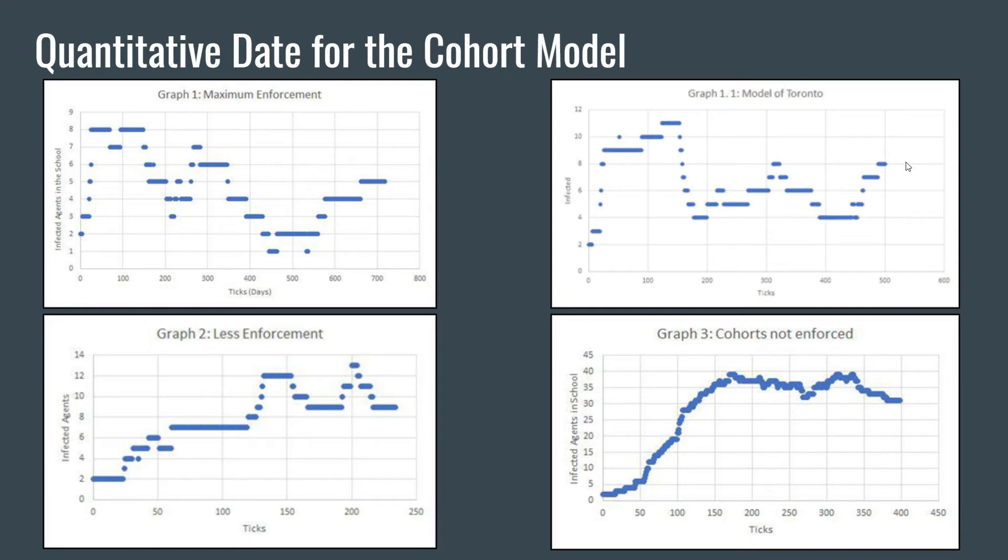However, in the extreme case without a cohort system and no social distancing measures, as shown in graph 3, there is no downward trend and no periodicity to be seen.